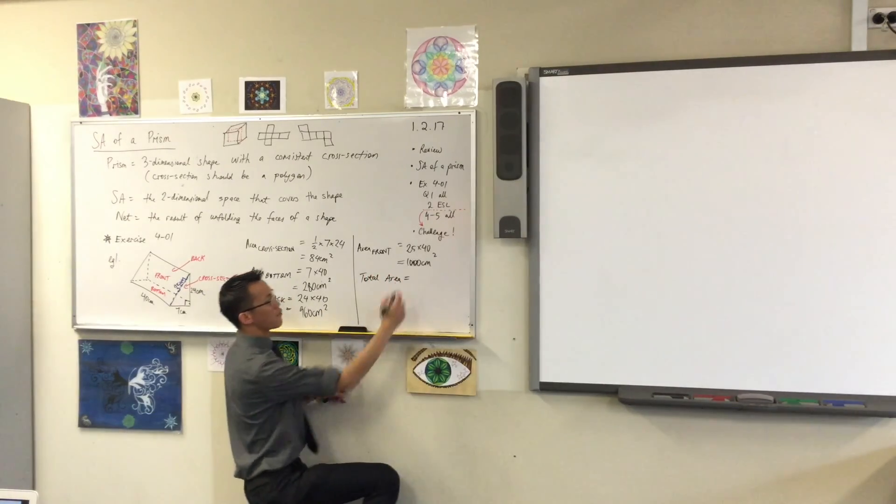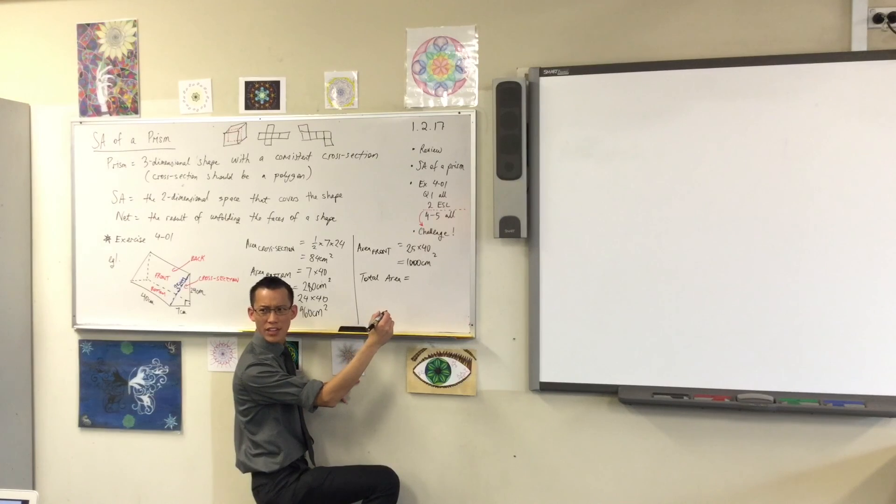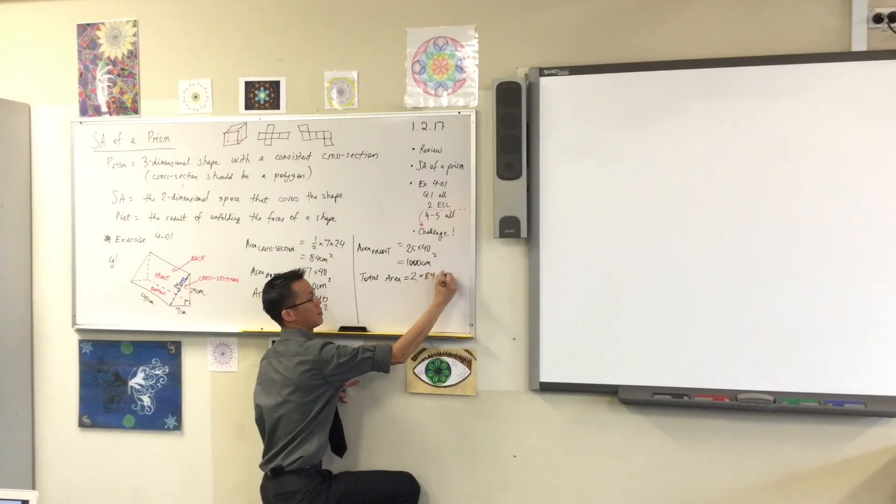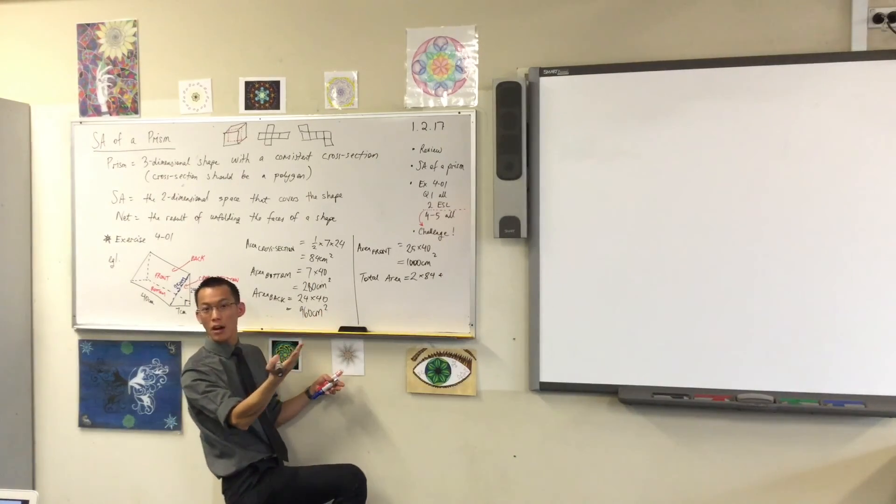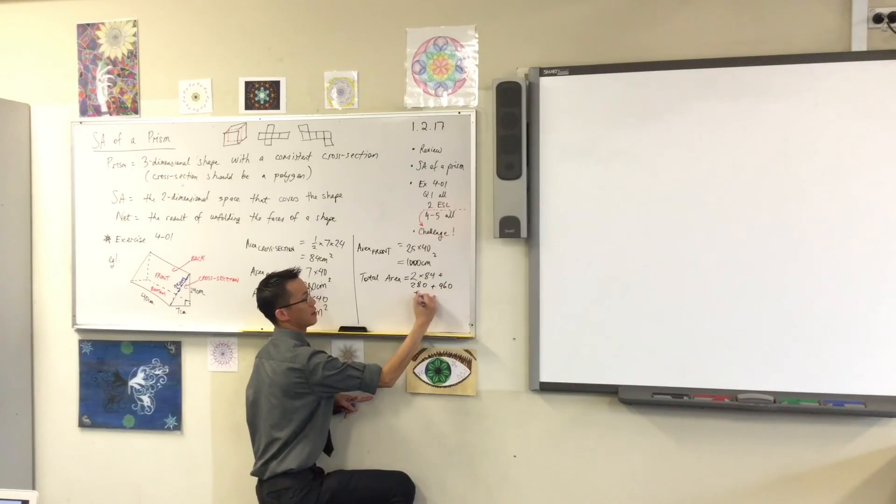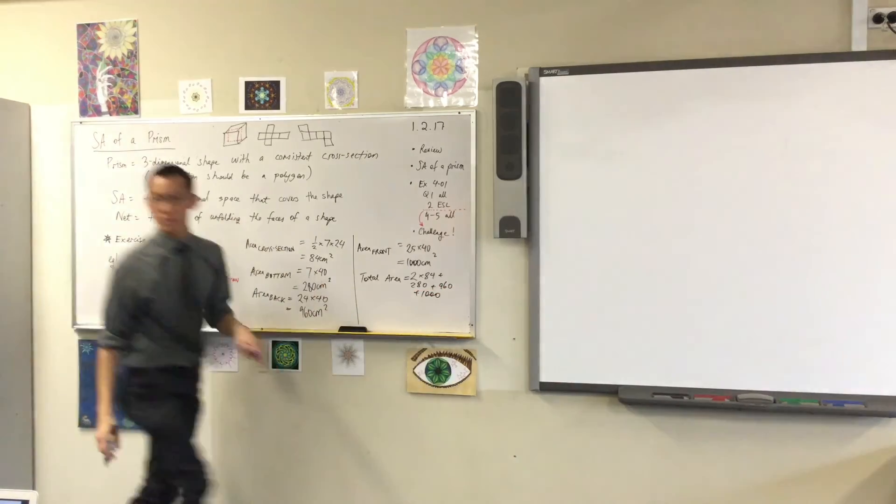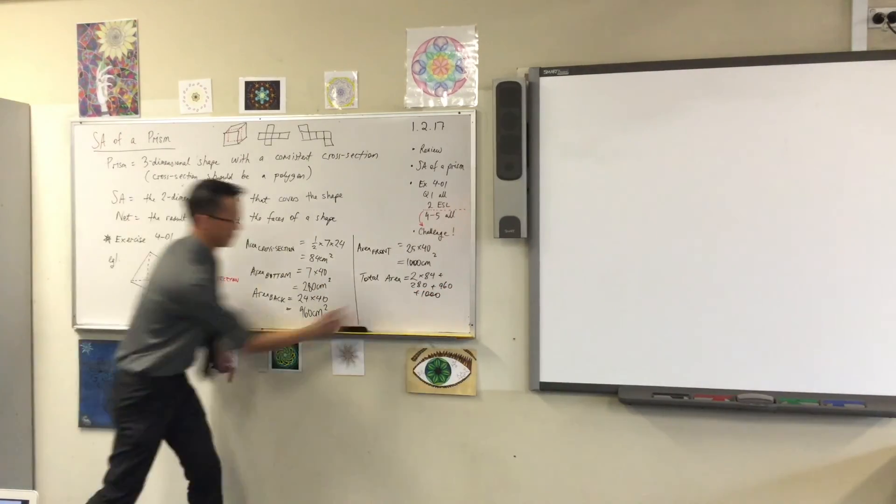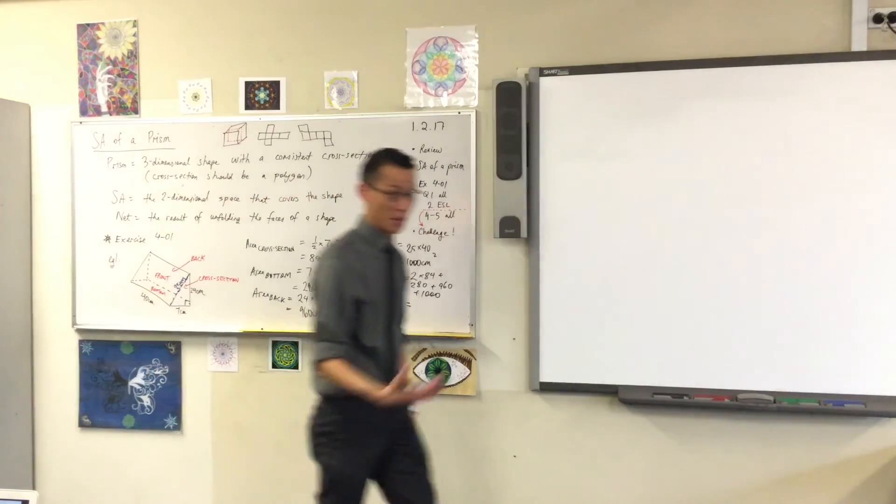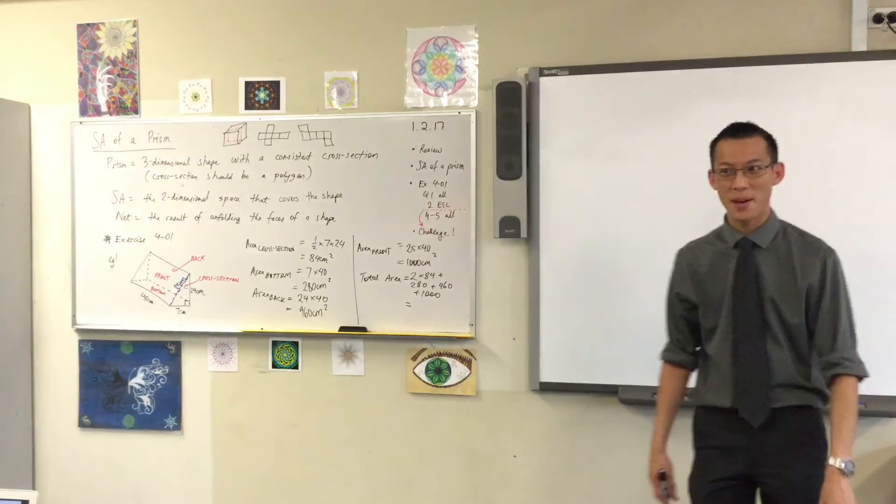Remember that cross section? How many of those do I have again? 2 of them. Fantastic. So 2 of the cross section plus every other number I worked out. 280, 960 and 1,000. I didn't expect that in your head. Do you want to punch that in your calculator and tell me what number you think? Has anyone got it yet?